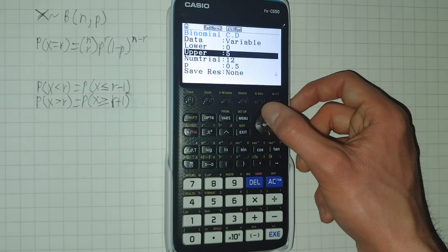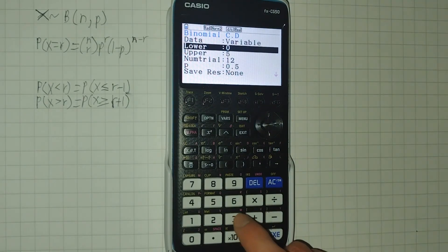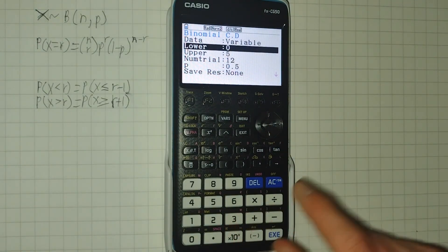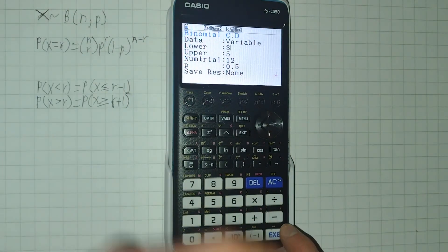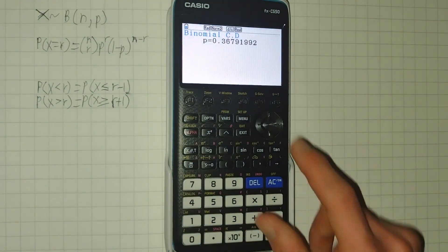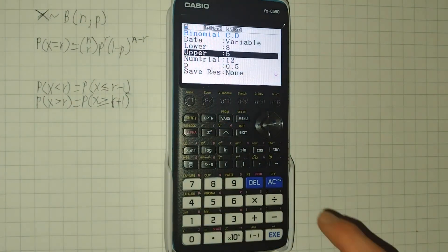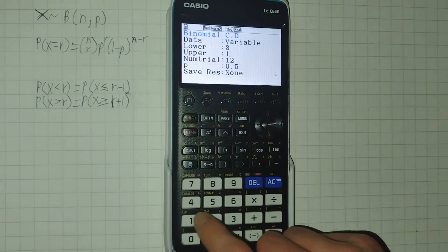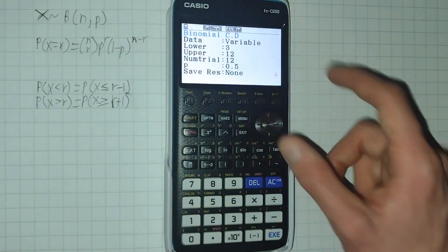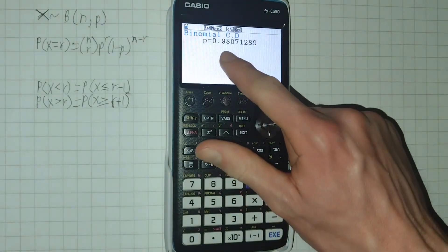Now, let's say we want to find the probability of getting between three and five heads. Well, we can set a lower bound of three. And we get that. If we want to find the probability of getting three or more heads, we need to set upper to the same value as number of trials. And we get that.